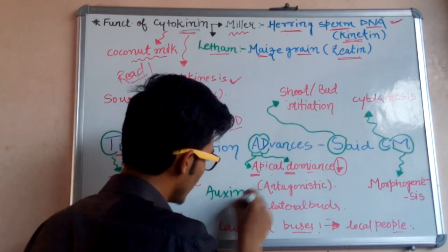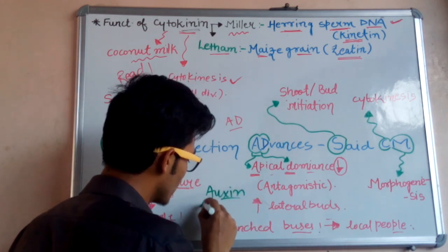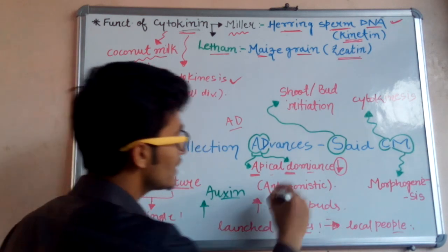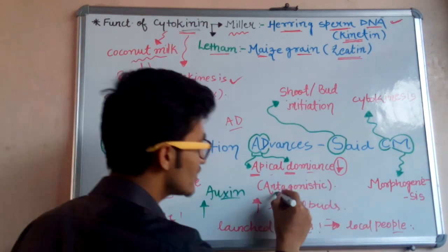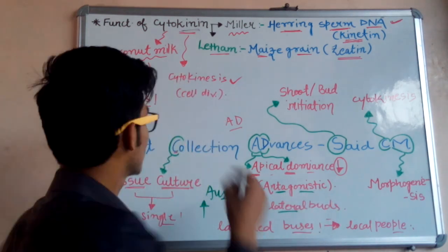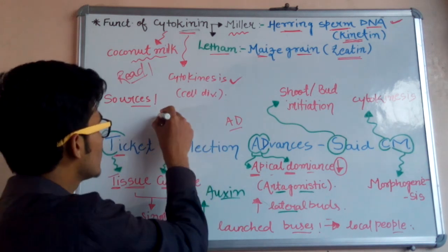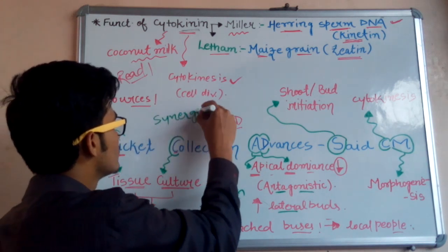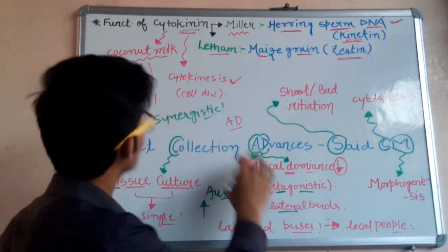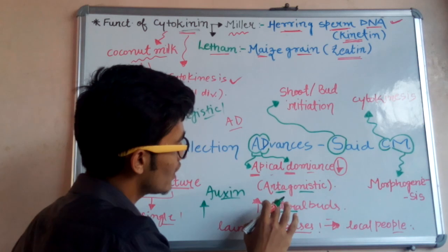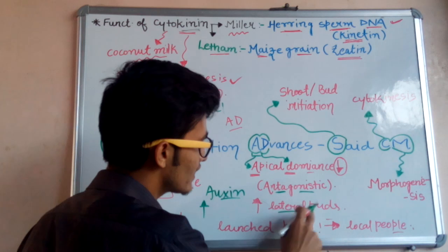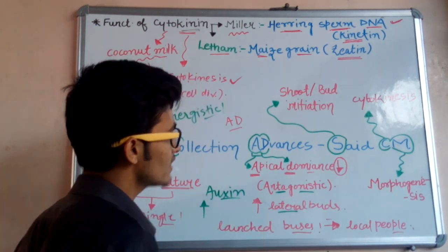So cytokinins are antagonistic to auxin — auxin increases apical dominance and reduces the growth of lateral buds, while cytokinin does the opposite. That's why they are known as antagonistic. If they were promoting the same thing, their effect would be cumulative and they would be known as synergistic. So auxin and cytokinin are antagonistic because cytokinin decreases apical dominance and increases the growth of lateral buds, while auxin does the opposite.